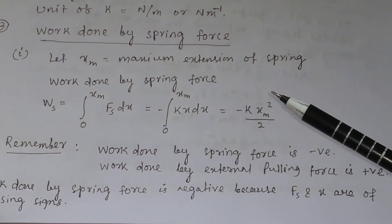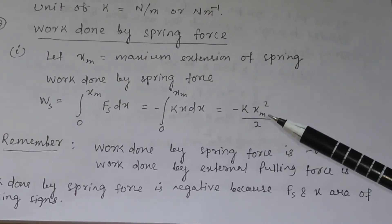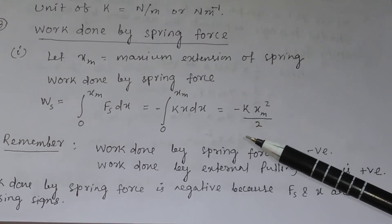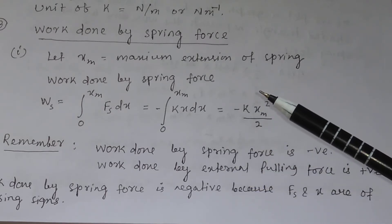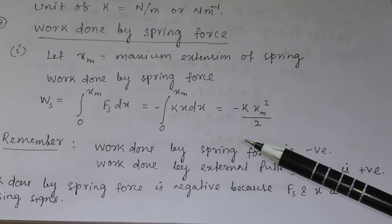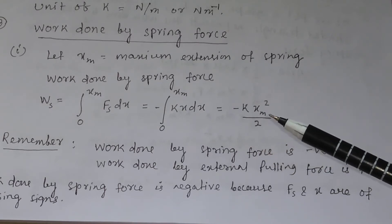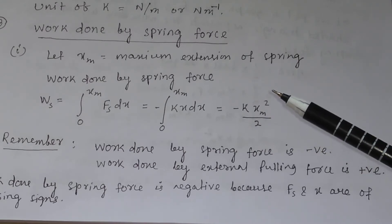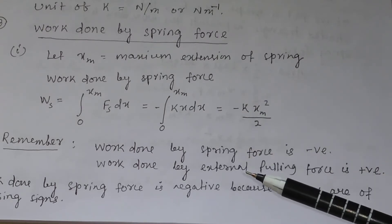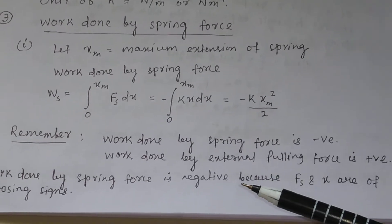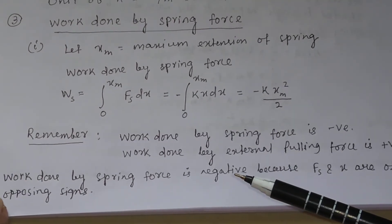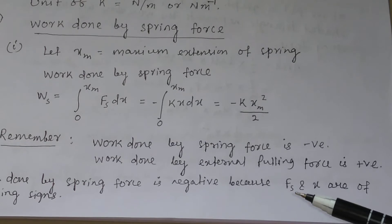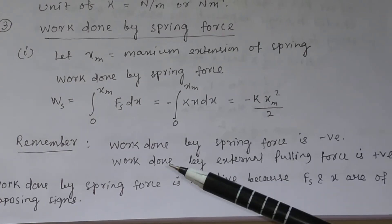Work done by the spring force is always negative because it is always opposite to the direction of displacement. The work done by the external (pulling) force is opposite to the work done by the spring force, so the work done by the external force is positive. The work done by the spring force is negative because fs and x — the spring force and displacement — are of opposite sign.